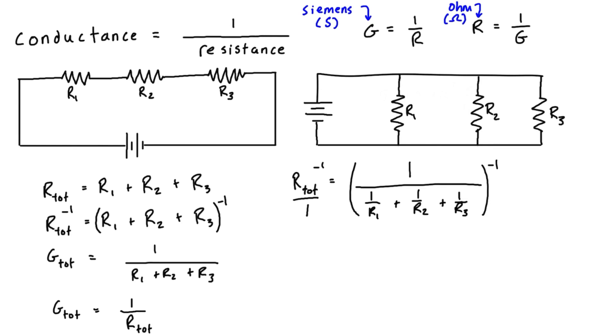But what we can do is take the inverse of both sides. So if R total is over one, then we're just going to flip each fraction, so we have 1 over total resistance is equal to just the denominator of the right hand side.